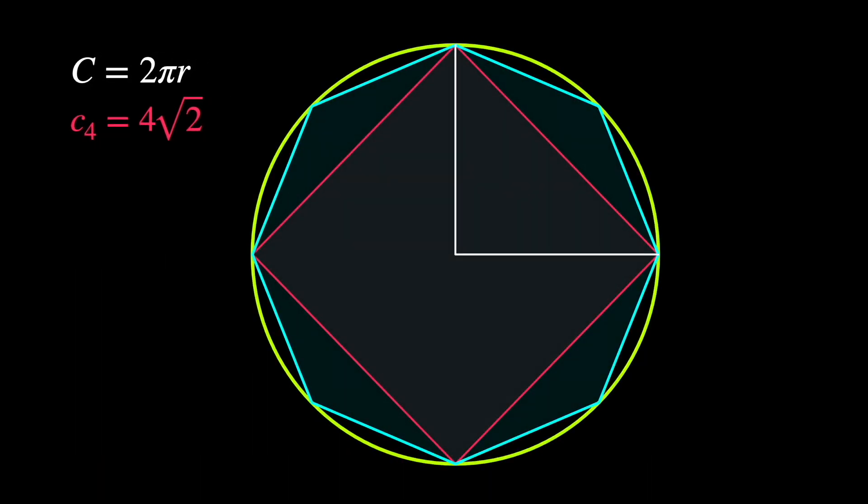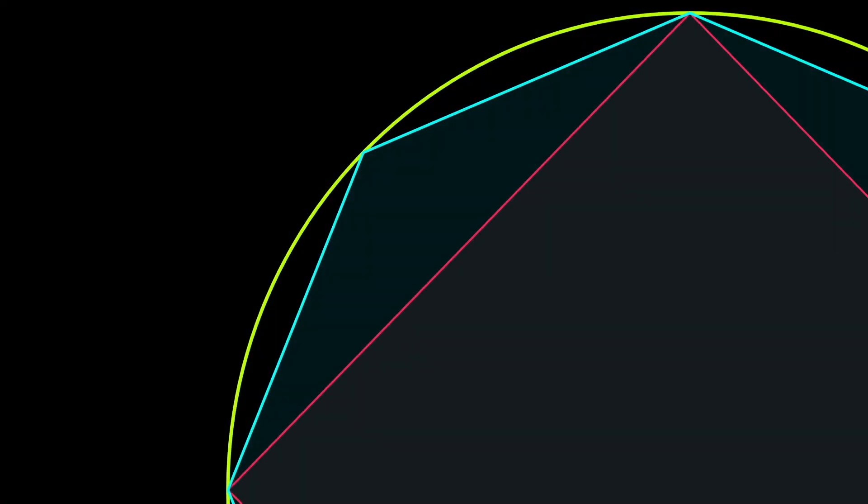Now we add a regular octagon in between the square and the circle. We see that the perimeter of the octagon is bounded below by the square and bounded above by the circumference. The question is, how much bigger?